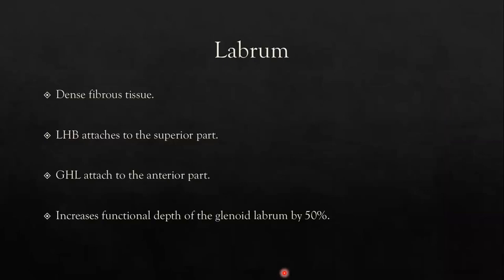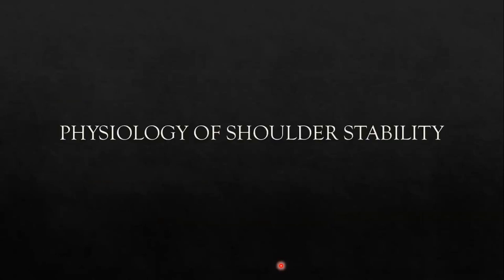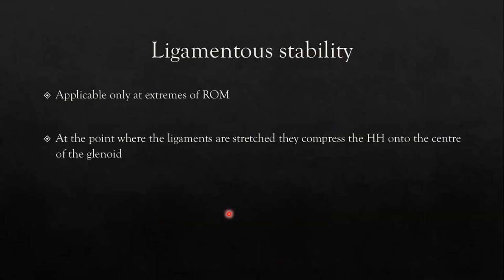The labrum is composed of dense fibrous tissue. The long head of biceps attaches to the superior part of the labrum and the glenohumeral ligaments attach to the anterior part. It increases the functional depth of the glenoid by 50%, providing biomechanical stability. For normal shoulder stability, ligamentous stability applies only at extremes of range of motion when the thick ligamentous bands tighten, compressing the humeral head onto the center of the glenoid. The main theme recurring in the literature is that stability is achieved only when the humeral head is forced into the center of the glenoid — the cuff, muscles, ligaments, and bony structures all function toward that single goal.